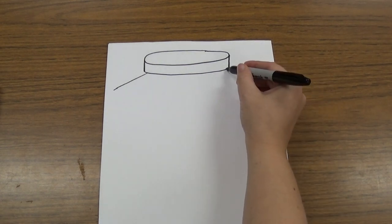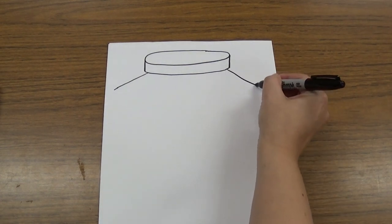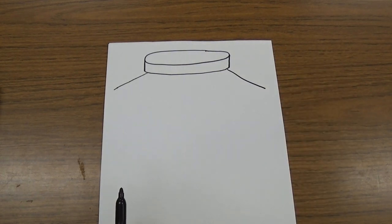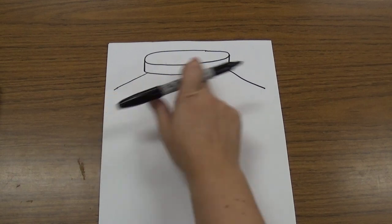Then we're going to do the same thing on the other side. It's going to go almost to the side of the paper but not quite. Notice how they both point out towards the sides.